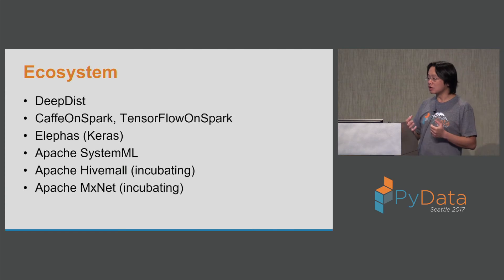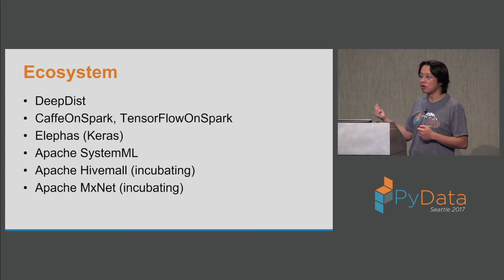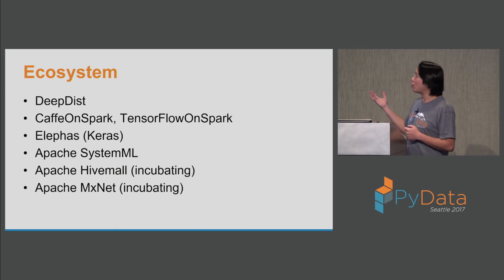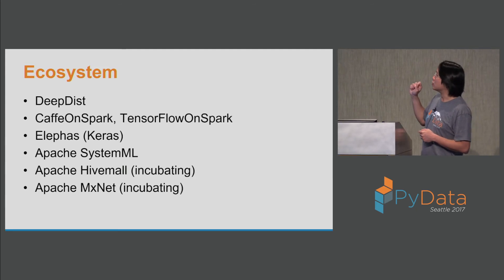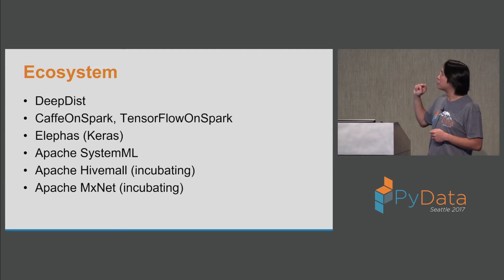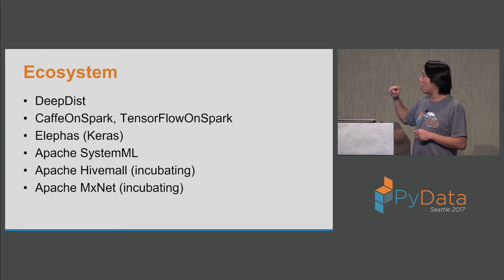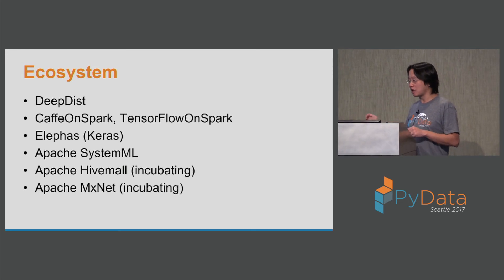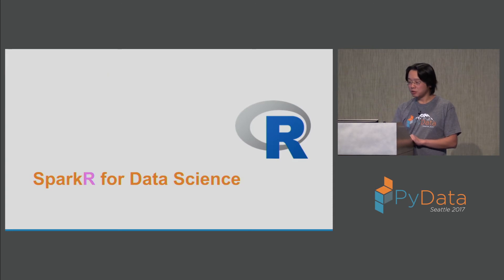It does so using the TensorFrames map_rows function internally, which tries to translate to mapPartitions as well. In terms of the Python ecosystem, there are many more frameworks I can't cover, but those with Python APIs include: Deep Dist, Caffe on Spark, TensorFlow on Spark, Apache projects like SystemML, HiveMall, and MXNet. Some more prominent ones are JVM-only with no Python binding.